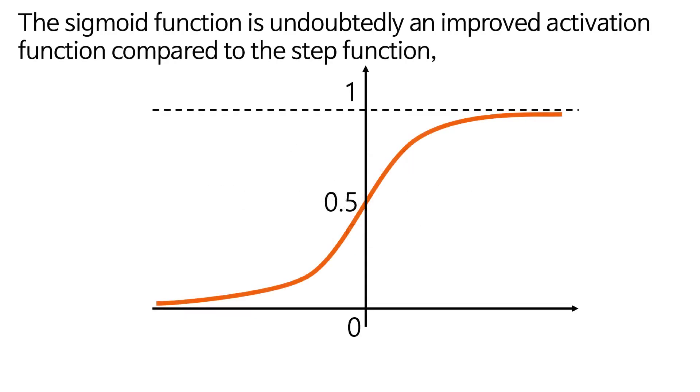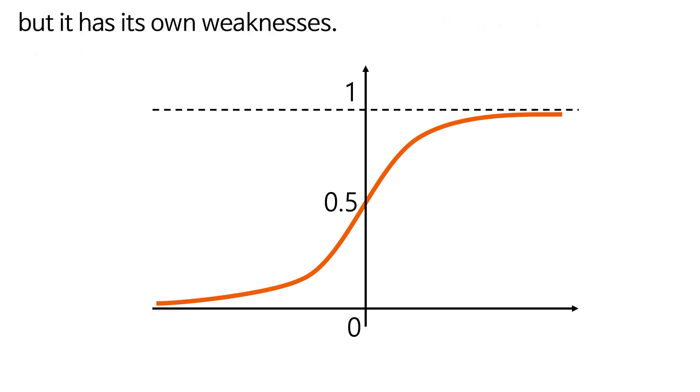Chapter 1: Weaknesses of the Sigmoid Function. The sigmoid function is undoubtedly an improved activation function compared to the step function, but it has its own weaknesses.